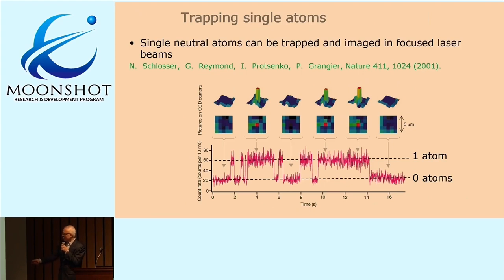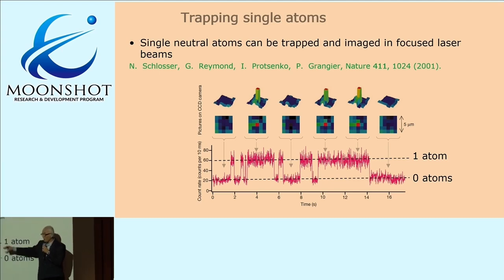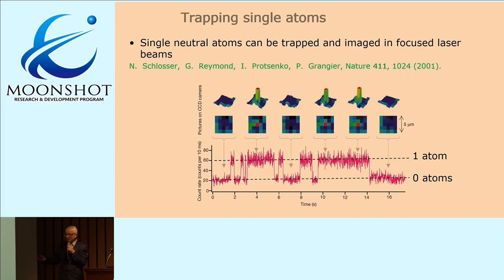He saw this remarkable telegraph signal where basically there were two levels of fluorescence from the trap. There was the background level, which corresponds to no atoms, and then one atom in the trap. What is markedly absent is two atoms. You would have expected the Poissonian distribution with a second step, third step, et cetera. This was absent.